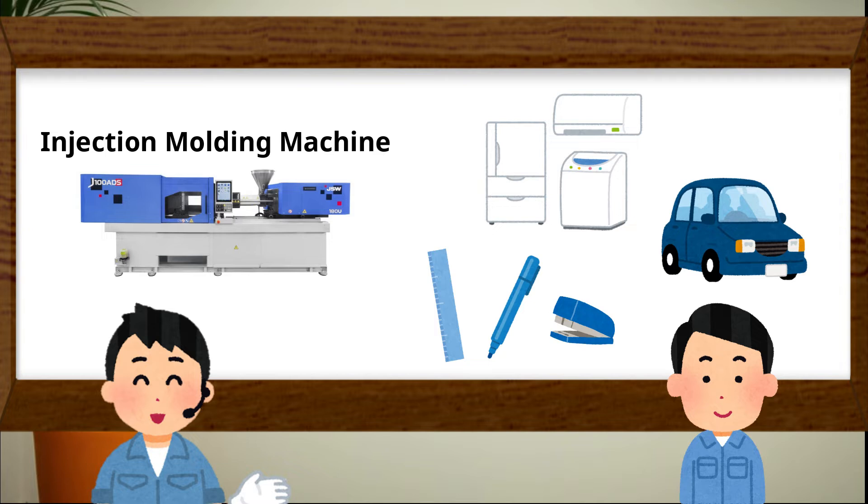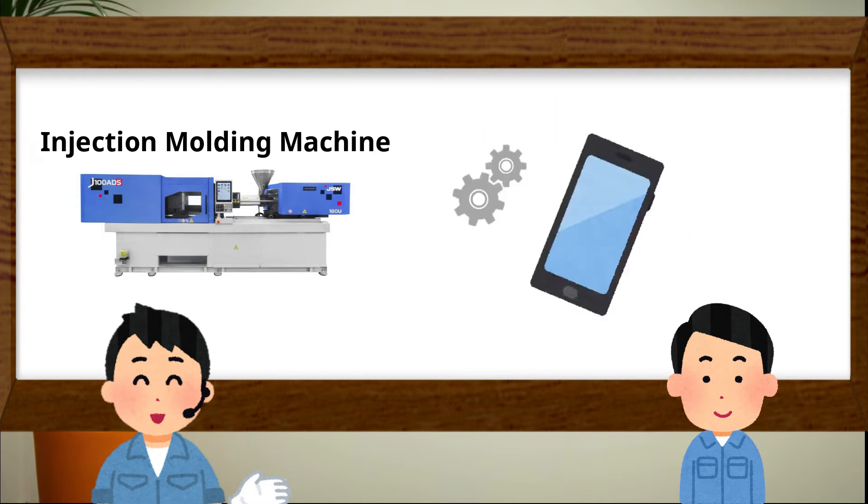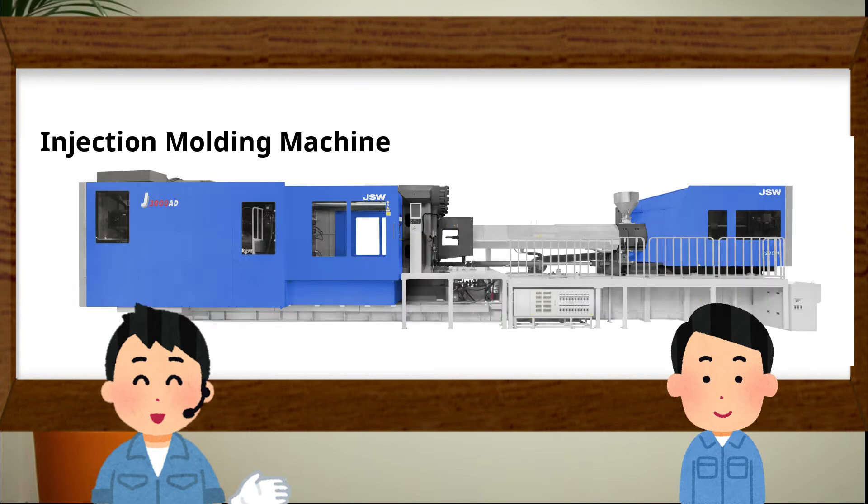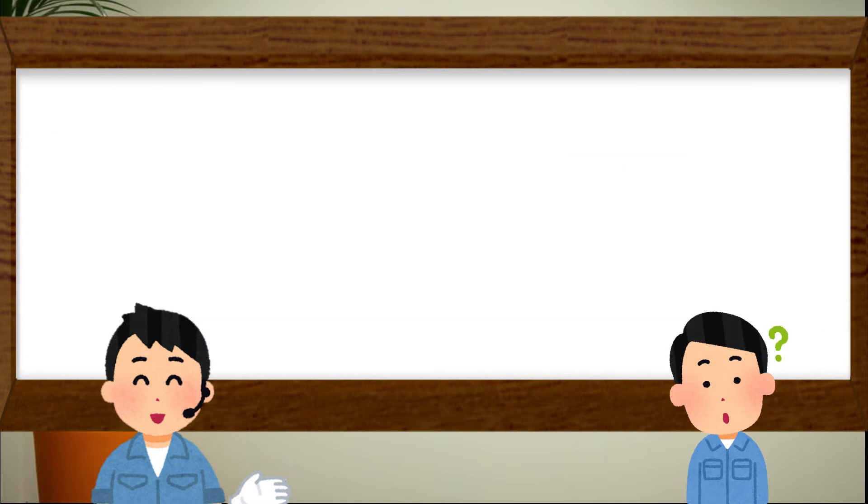The small parts is for electric product such as mobile phone. It is made by around 100 ton injection molding machine. So, what do you think are the large products that can be made with injection molding machine? For example, car bumper?